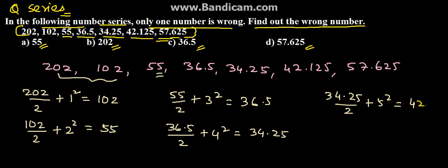If 42.125 is divided by 2 plus 6 square, we will get 57.0625.